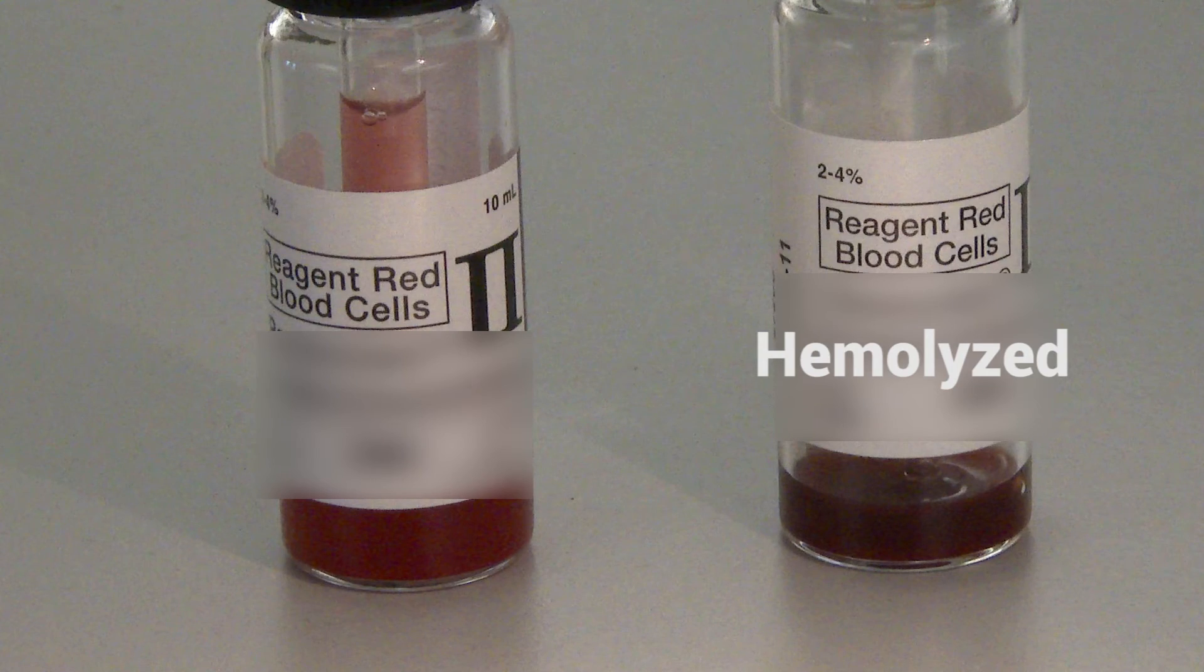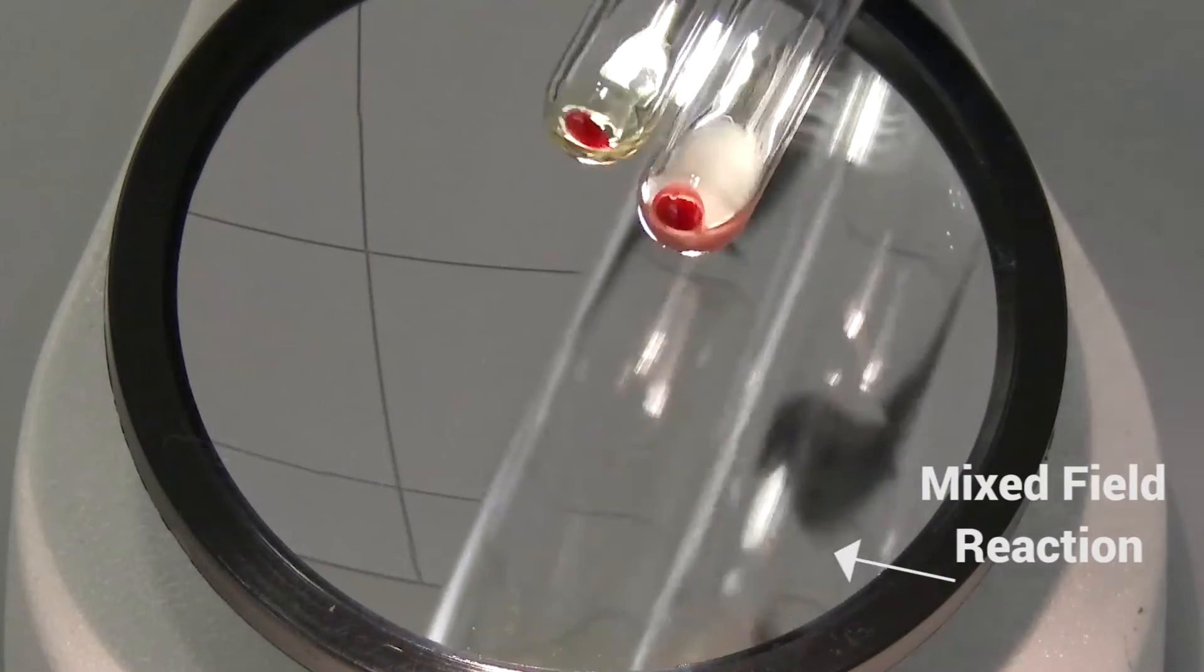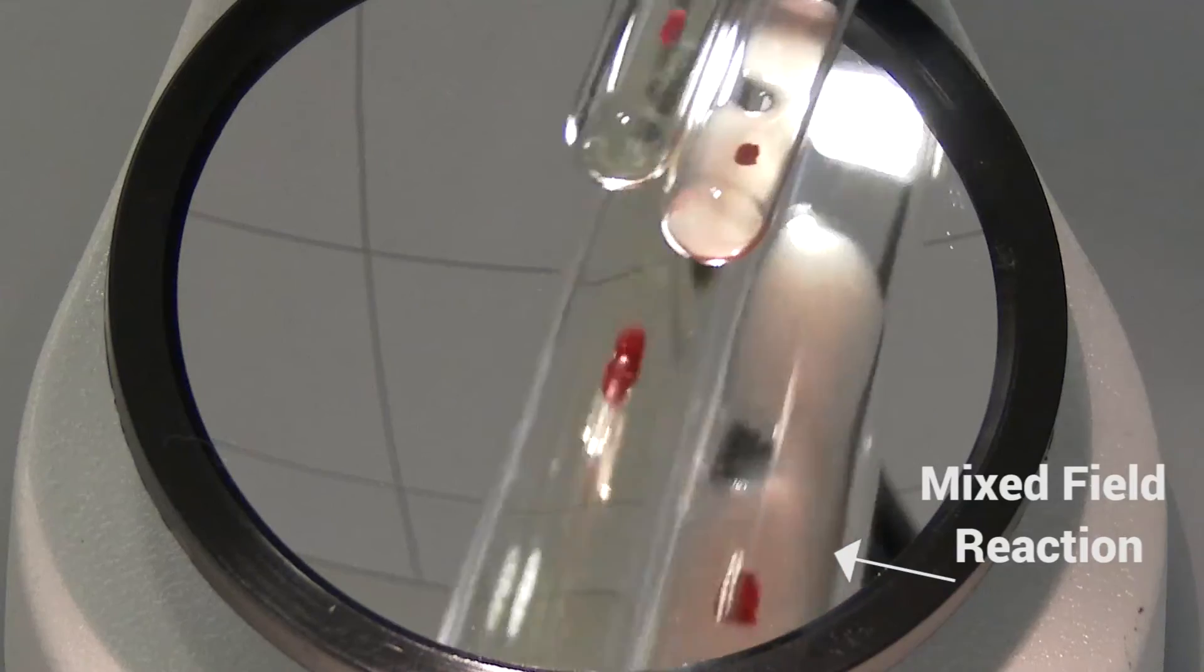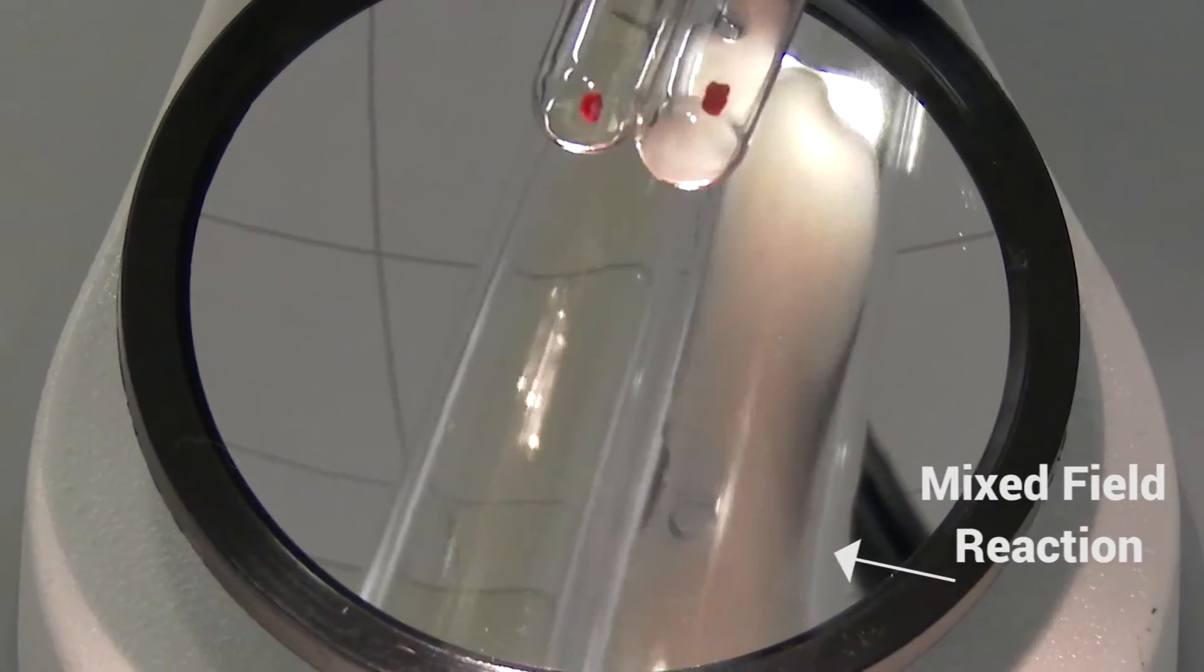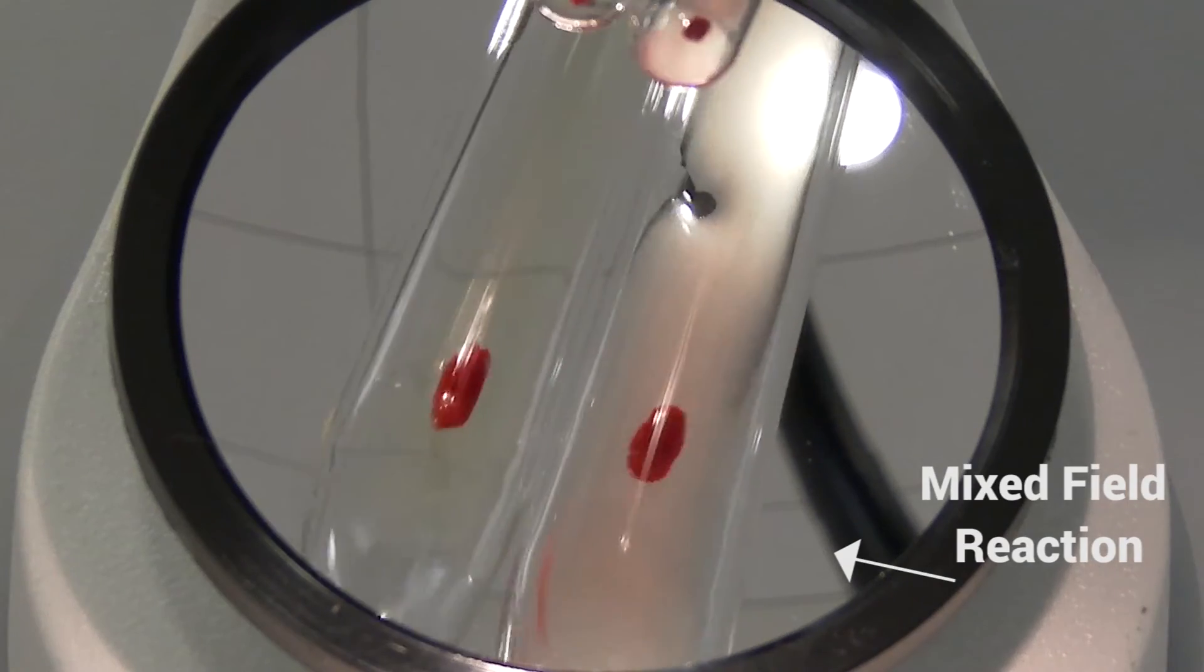The presence of large, strong agglutinates against a backdrop of free-floating cells is an indication of a mixed-field reaction. Such reactions are incredibly important to notice because they are abnormal and the underlying cause should be identified.